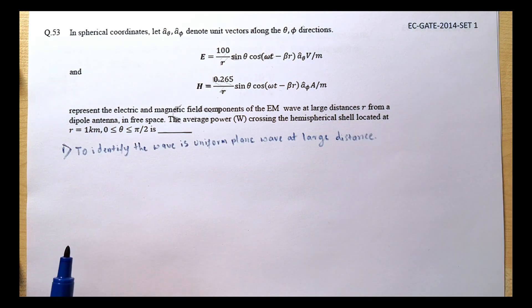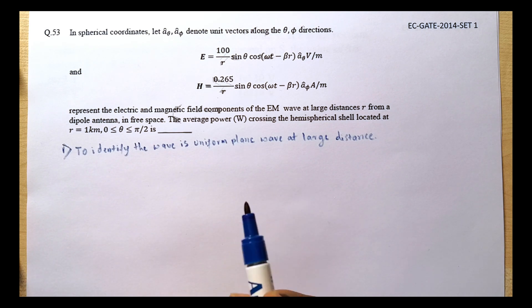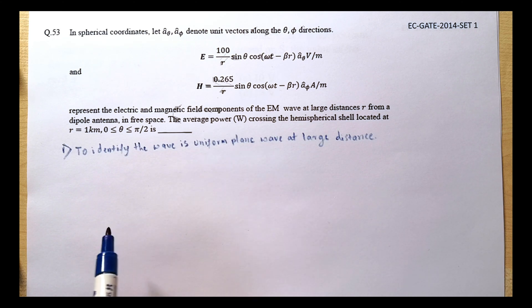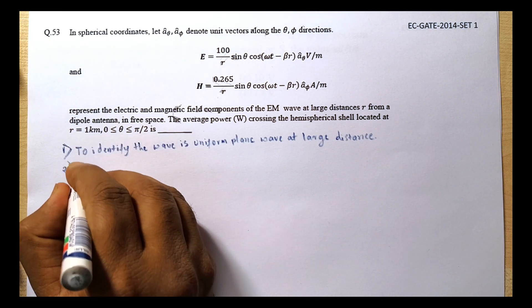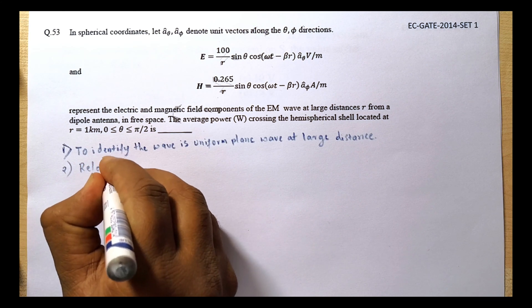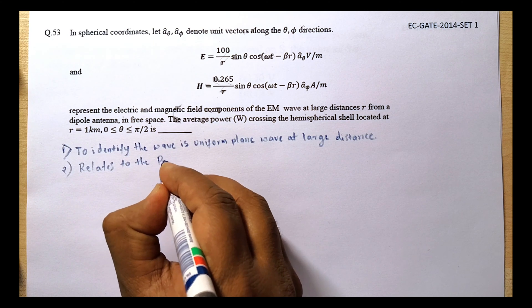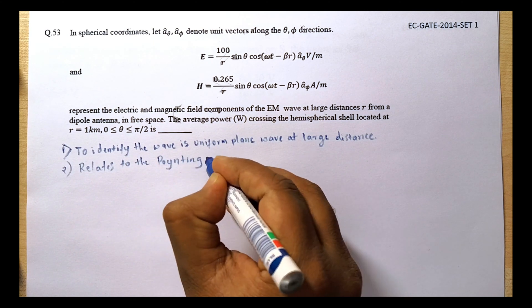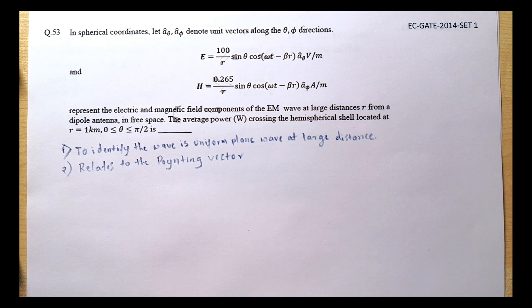The second thing is to find the average power crossing the hemispherical shell. Since it's a uniform plane wave and they are asking for average power flow, we have to understand that this problem relates to the Poynting vector.